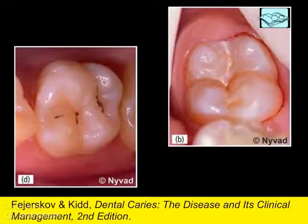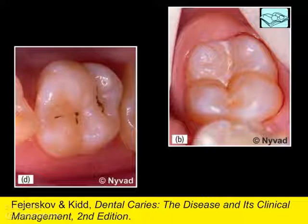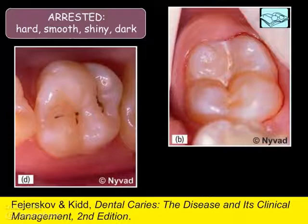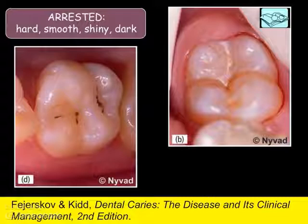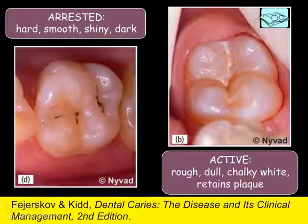Let's look at some real-life lesions and compare two lesions from our cariological textbook. On the left, we have three lesions that are arrested. If you were to gently probe them, you would find the surface is hard and smooth. It looks dull and chalky white. On the right, a lesion that is active — if you were to gently probe it, you would find the surface is rough. It also looks dull and chalky white, and the authors say they had to remove plaque just to look at the lesion. As a rule, if a lesion is retaining plaque, it is more likely to be active. Notice also that the gingiva is bleeding after the plaque was removed.